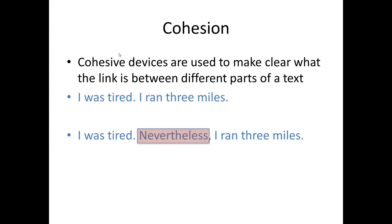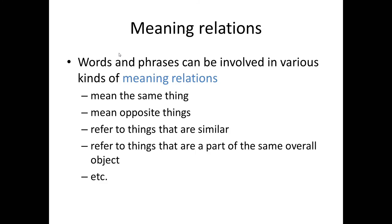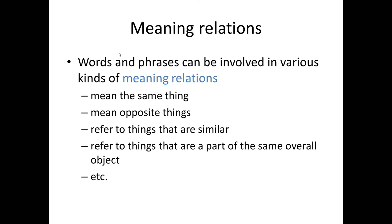There are many different types of cohesive devices. Lexical cohesion is concerned with words and phrases which are involved in some kind of meaning relation, and which act to unify the text — that is, they provide links between or among sentences to create a cohesive text. Words and phrases can be involved in various kinds of meaning relations: they can mean the same thing, opposite things, they can refer to things that are similar, or to things that are part of the same overall object, and so on.